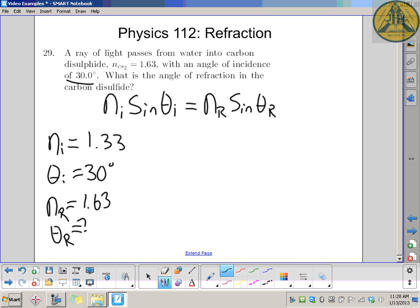Before you do any calculations, you should know that your answer should be less than 30, because it's going to slow down. The bigger index of refraction means light travels slower inside your carbon disulfide than in water. So it's going to slow down and bend down towards the normal line.